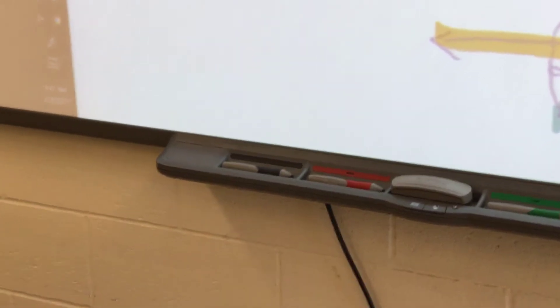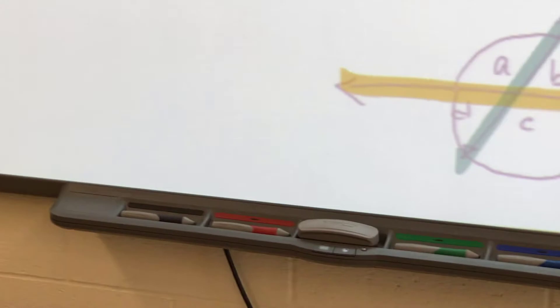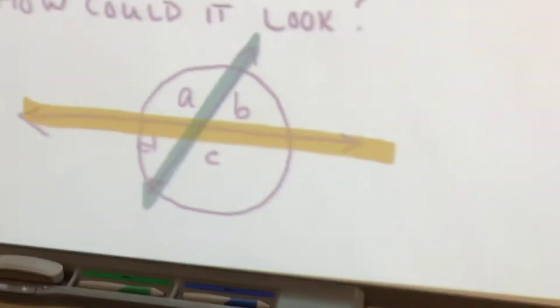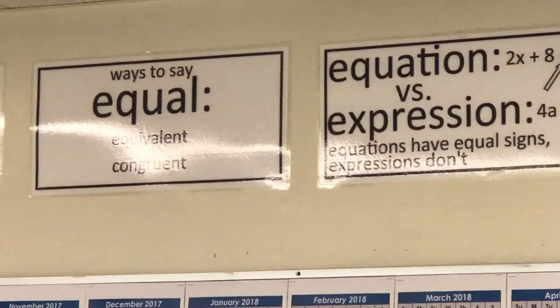What is it? Two intersecting lines that are congruent angles. Two intersecting lines that have congruent angles. The angles that are congruent. What does congruent mean again? Equal. Equal. Congruent is another way to say equal.